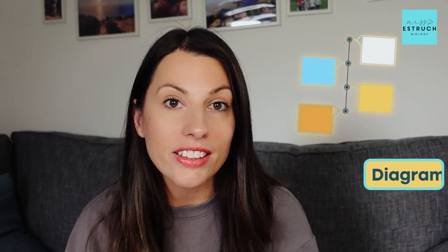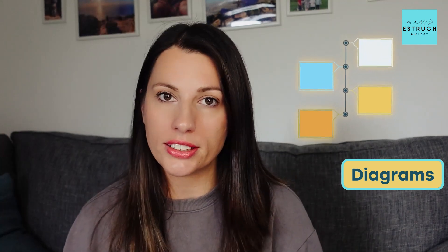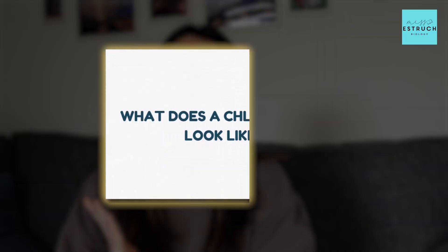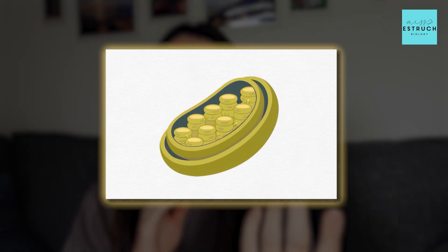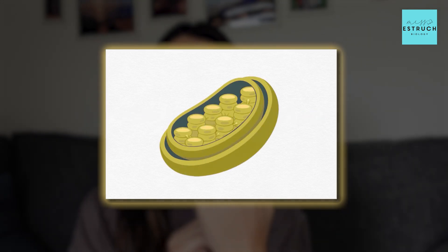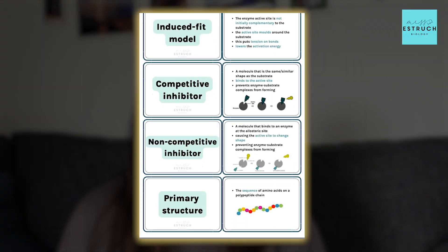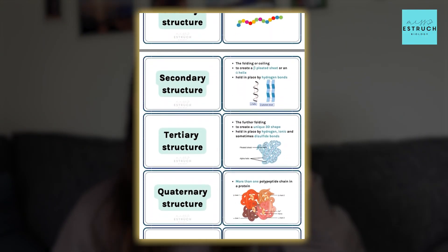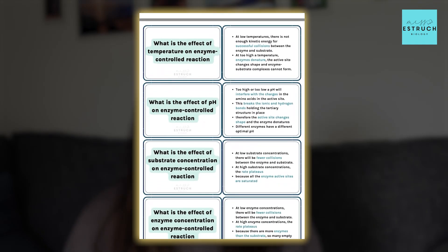Another really effective type of flashcard uses diagrams. You might have different structures that you need to know — for example, 'What does a chloroplast look like?' and on the other side you've got an image. You can use that card either way around: look at the picture and test whether you know the structure or which organelle it is, then flip it around. Or, as you can see in my flashcards, you could have diagrams representing the different levels of organisation in proteins.